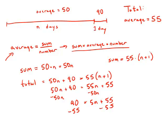90 minus 55 is 35. We get 35 equals 5n, or in other words, n equals 7. And this is answer choice E.